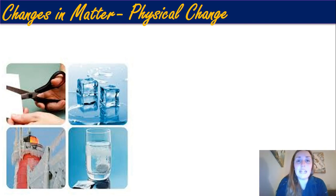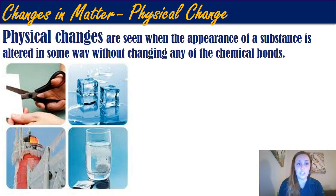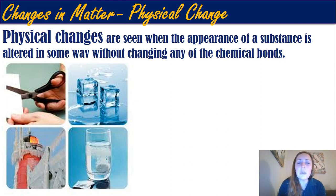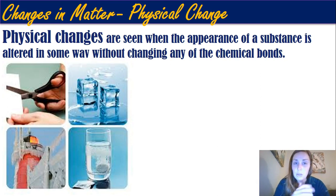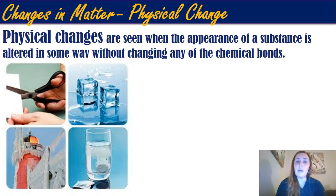The first type of change in matter is called a physical change. A physical change is seen when the appearance of a substance changes and it's altered in some way — it looks different — but at the molecular level, when you look at the atoms, you're not going to change any of those bonds. The chemical bonds, or how atoms are actually arranged, don't change. It's just a change at the superficial level — what we see.